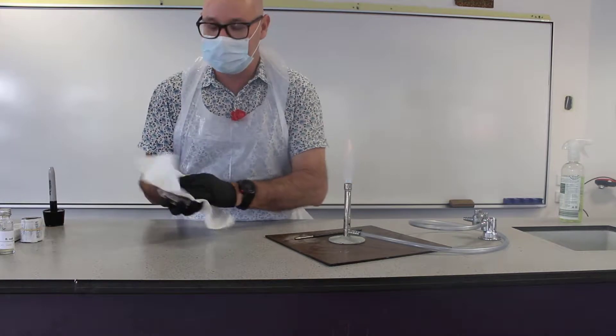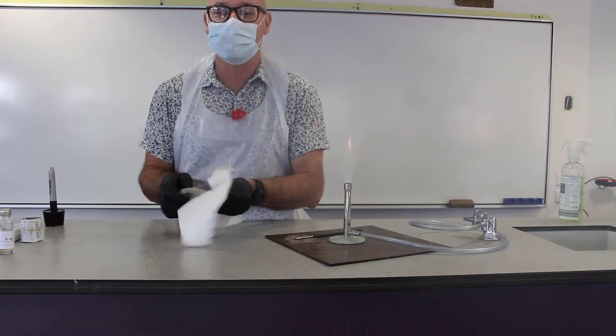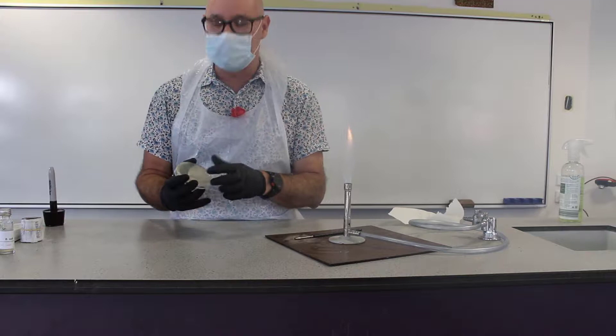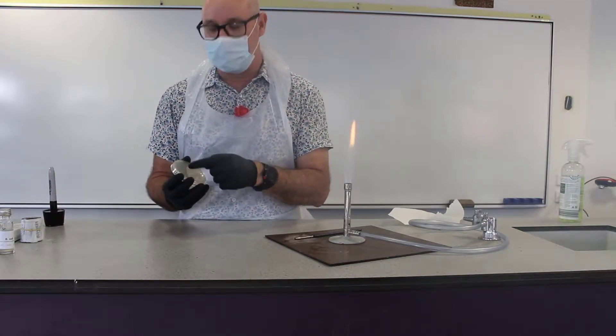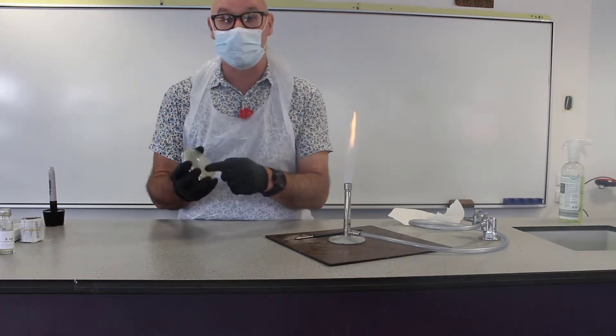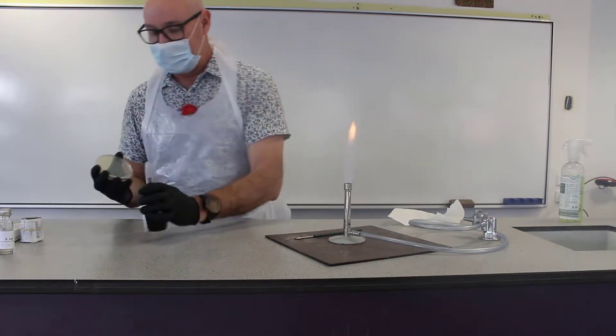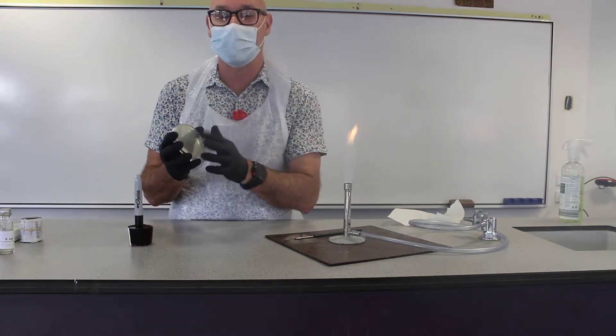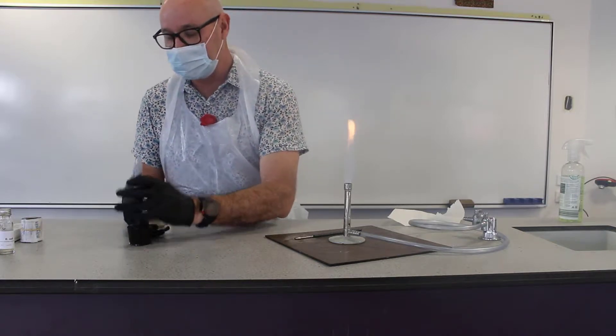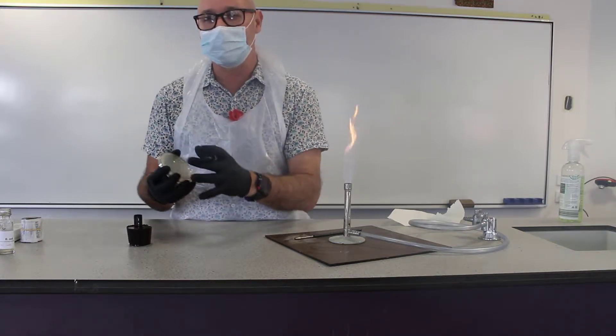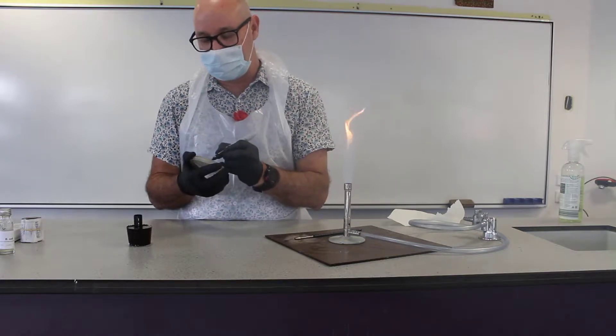The next thing we're going to do is label our agar plate with today's date, my name, and the bacteria that we're going to inoculate the plate with. It's important to use the bottom part of the plate just in case the lid could get mixed up and swapped around.